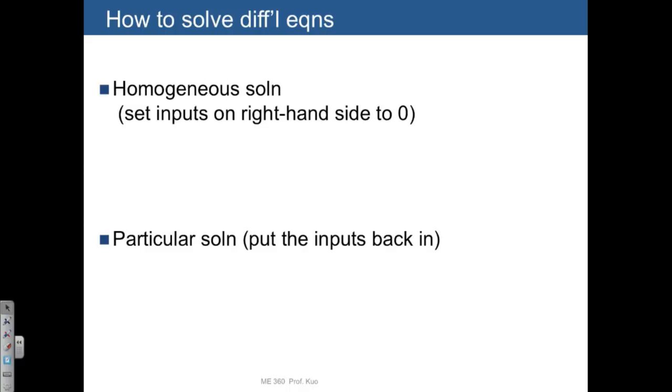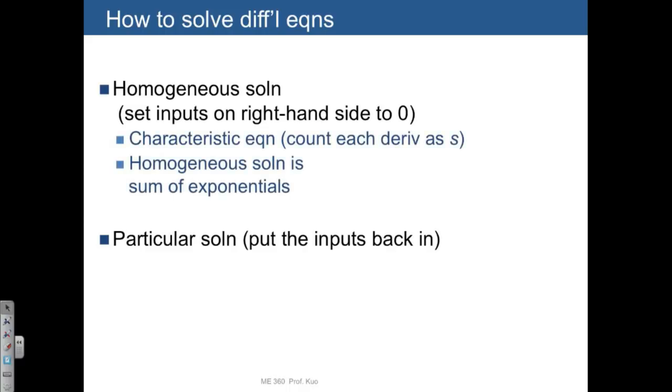For the homogeneous solution, there's something we call the characteristic equation, where each derivative in our system we're actually just going to replace with the variable s. And then the homogeneous solution is going to be a sum of exponentials using these s's that we've solved for.